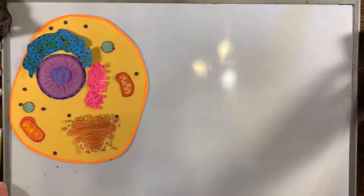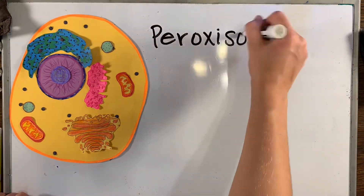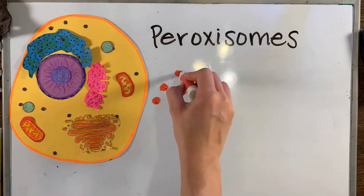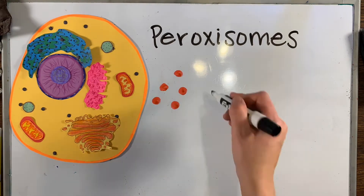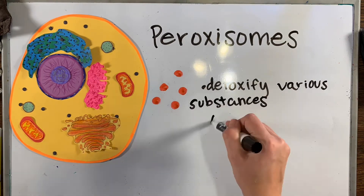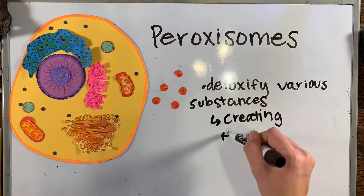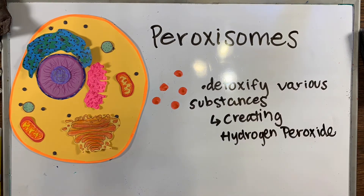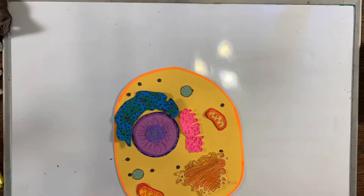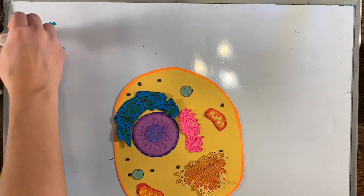Peroxisomes are small organelles similar to lysosomes, but the enzymes they contain have a different function. These enzymes are typically used to detoxify various substances by creating hydrogen peroxide. Now that we're done with all those organelles, let's talk about cell size.